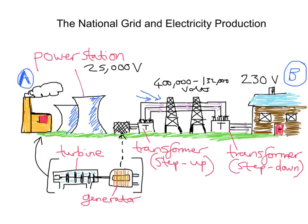Just to recap: we burn our fuel to boil water so as to produce steam. The steam turns a turbine, which generates electricity. We then use a step-up transformer to increase the voltage to transmit that electric current along all the cables and wires in this extensive network around the country. And then we use a step-down transformer to make the voltage safe enough to use that electricity in our homes.